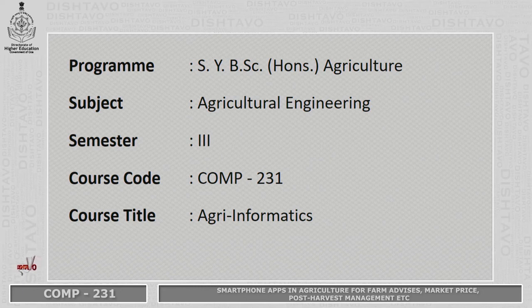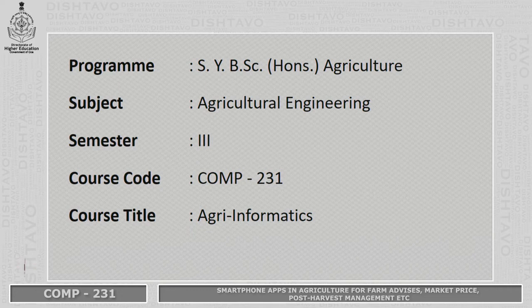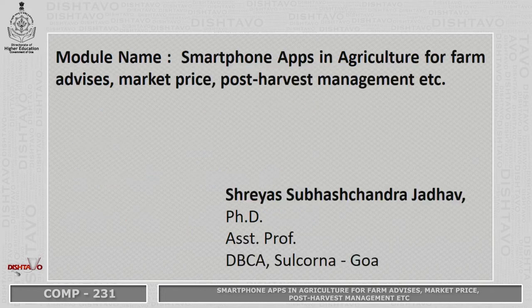Welcome dear students. Today we are going to learn the subject Agricultural Engineering for the second year BSc Agricultural Program. The title of the course is Agri Informatics. The course code is Computer 231 of semester 3rd. The name of the module is Smartphone Applications in Agriculture for Farm Advice, Market Price, Post-Service Management, etc.